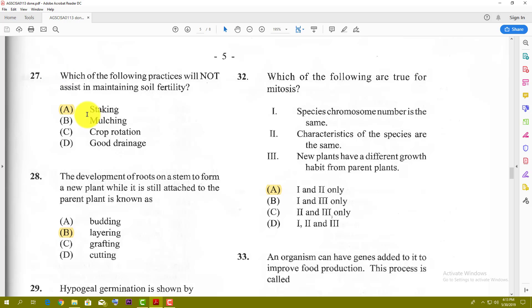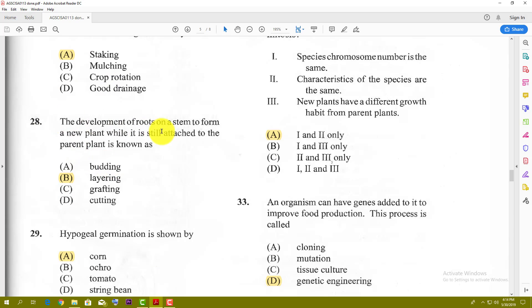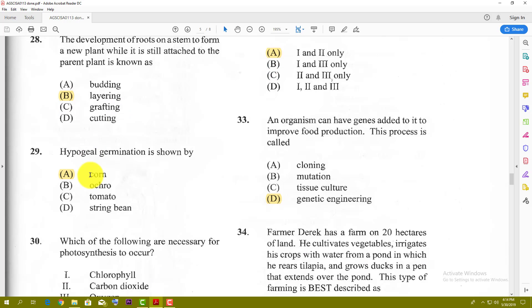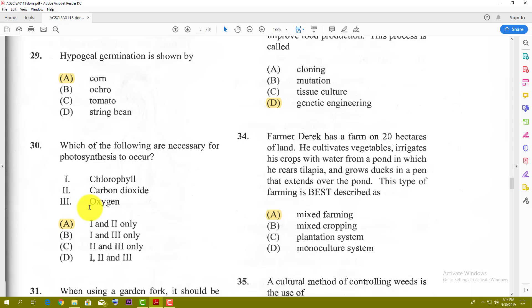Number twenty-eight: the development of roots on a stem to form a new plant while it is still attached to the parent plant is known as layering. It could be air layering or a number of different layering types, but grafting and cutting all require separation from one plant to the next. Number twenty-nine: hypogeal germination is shown by corn. Number thirty: which of the following are necessary for photosynthesis to occur? The best answer is one and two, which is chlorophyll and carbon dioxide. The plant needs chlorophyll to capture the light and carbon dioxide. Chlorophyll, light, and carbon dioxide come together to help with photosynthesis.